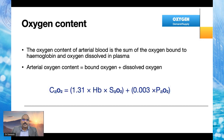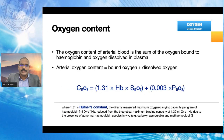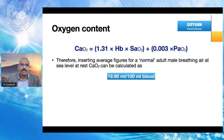The formula is: CaO2 equals 1.31 times hemoglobin times oxygen saturation, plus the dissolved component 0.003 times the partial pressure of arterial oxygen. The figure 1.31 is known as Huffner's constant — the directly measured maximum oxygen carrying capacity per gram of hemoglobin in mL O2/g Hb, reduced from the theoretical maximum of 1.39 mL O2/g Hb due to the presence of abnormal hemoglobin species in vivo. With normal values for an adult male, this calculates to approximately 20 mL per 100 mL of blood.